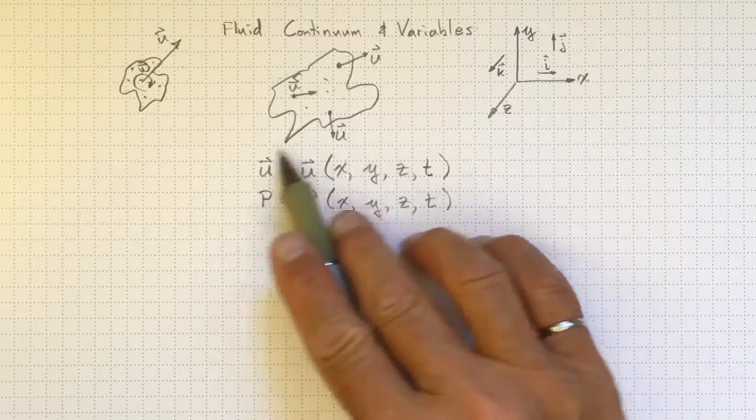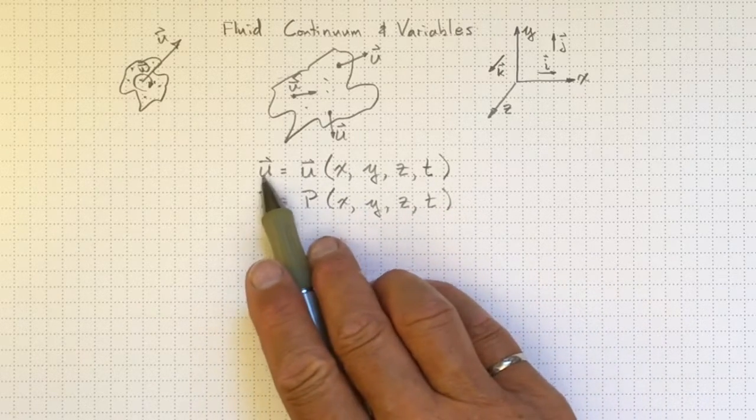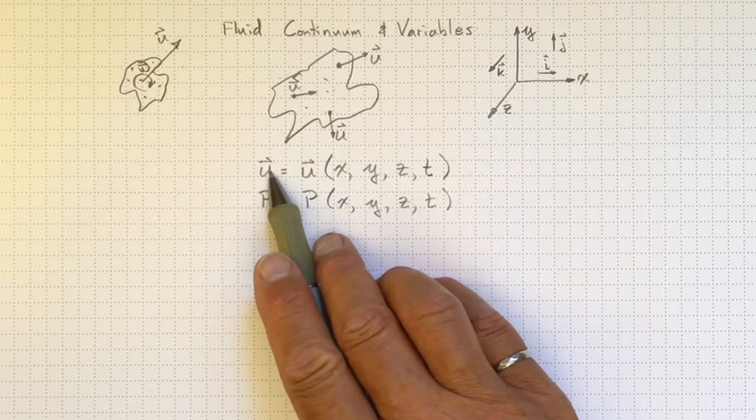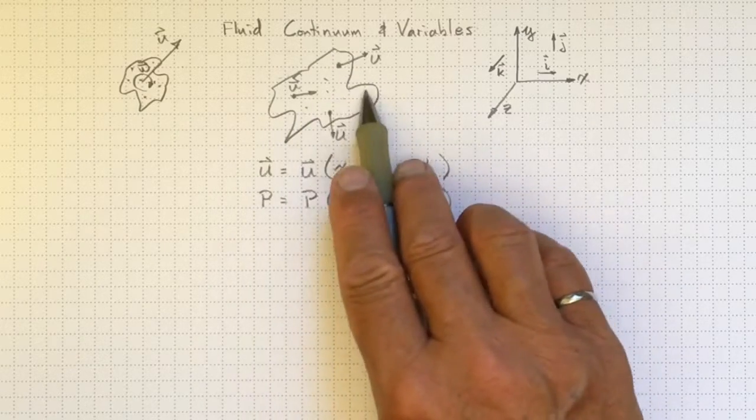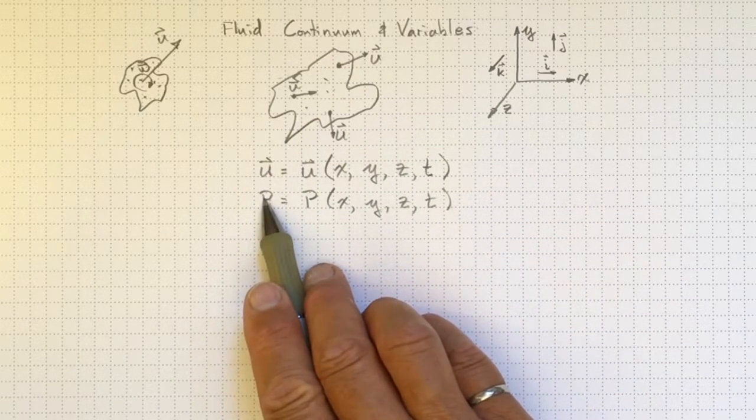These are our primary variables in fluid mechanics. We're interested in the velocity that the fluid's traveling at, at different locations in the fluid, and what the local value of the pressure is.